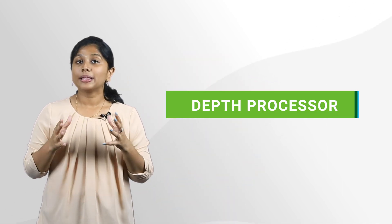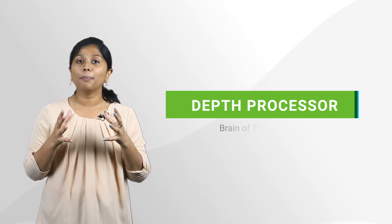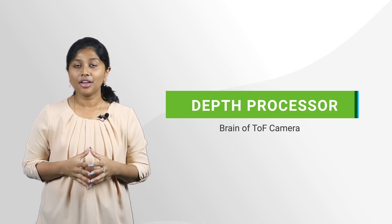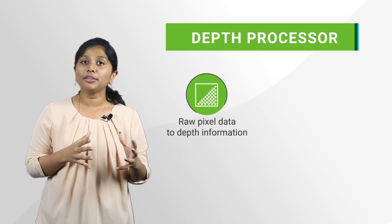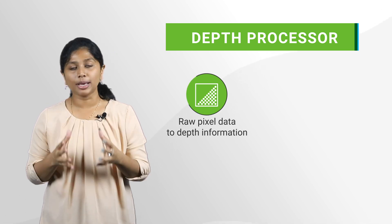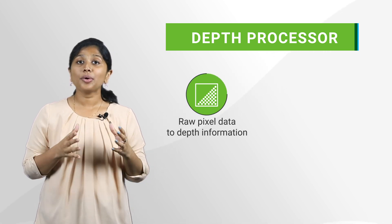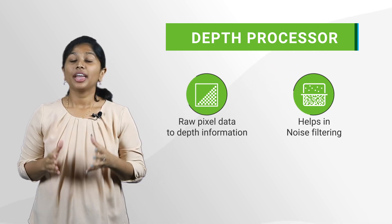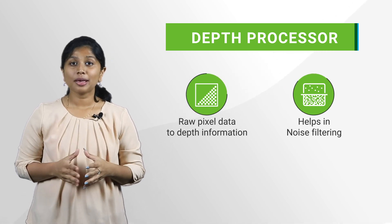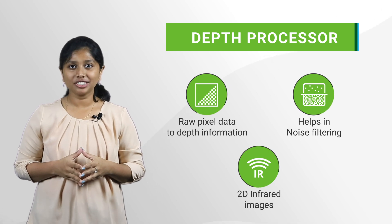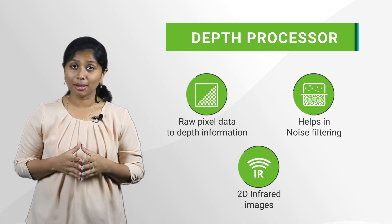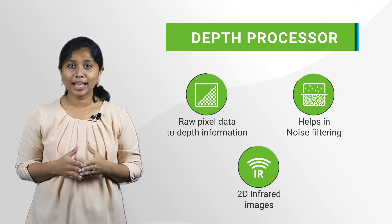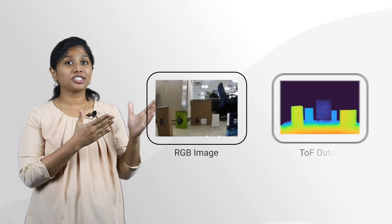The third component of the time-of-flight camera is the depth processor, which can be called the brain of the camera. Its key function is to convert the raw pixel data obtained from the time-of-flight sensor into depth information. It also helps in noise filtering to improve the output depth quality. In addition, it provides passive 2D infrared images that can be used for other end applications.